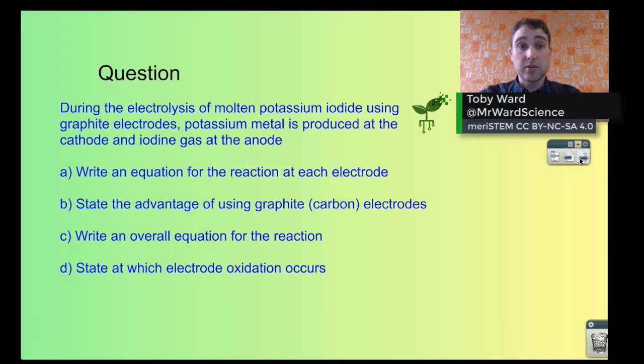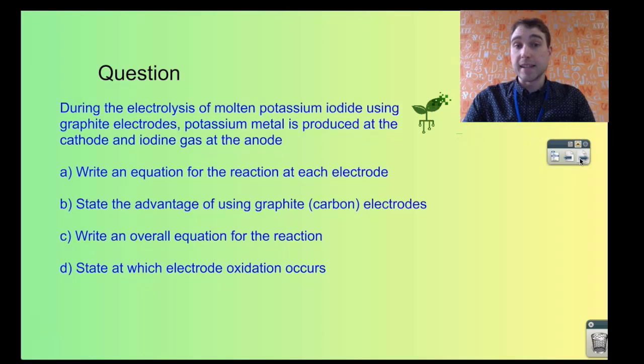So here's an example question. During the electrolysis of molten potassium iodide using graphite electrodes, potassium metal is produced at the cathode and iodine gas at the anode.